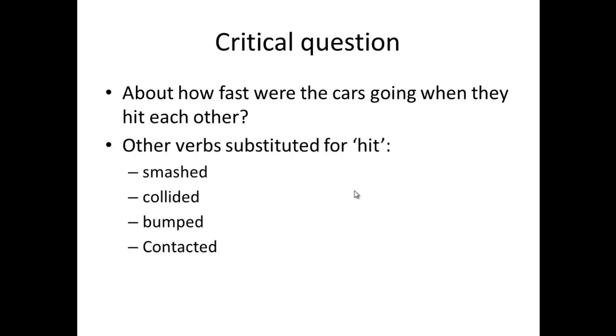The independent variable, the thing that Loftus and Palmer changed, was the verb used in place of hit. For some of the participants, the word hit was used. That was changed for smashed, collided, bumped, and contacted for each of the different groups. So they were interested whether by changing that critical word, that critical verb, did it affect participants' estimates of how fast, on average, the cars were going across all seven clips?